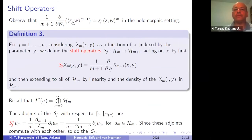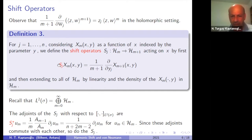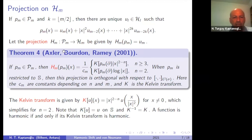This is a somewhat abstract way to define shift operators, but we also need to connect to the real world — that is, multiplication by coordinate variables. Multiplication by coordinate variables alone does not preserve harmonicity, so we must project onto the harmonic subspace. Those projection formulas are known and involve the harmonic part of a polynomial.